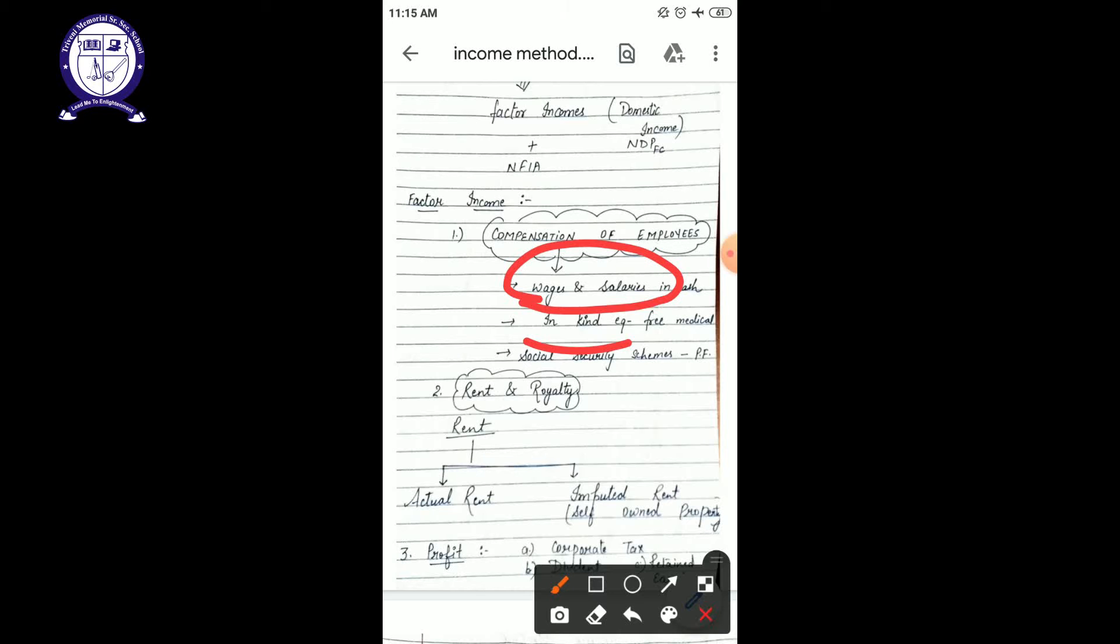Third one is your social security scheme. Social security scheme means the scheme which involves the security of the person. For example, your provident fund, gratuity, some things are there, some kind of benefits are there which are provided to the employees by the company so that they can feel socially secure.